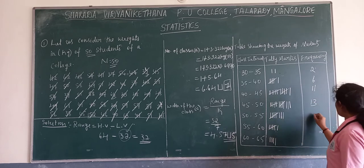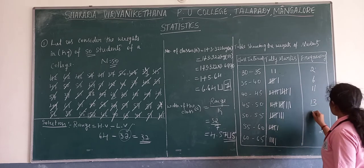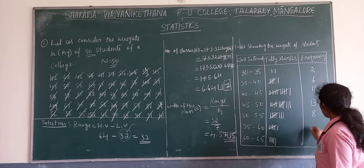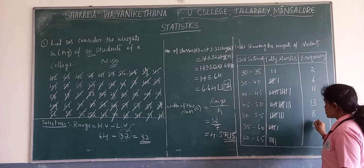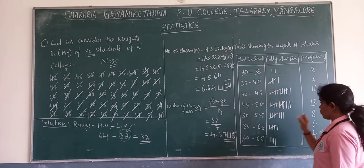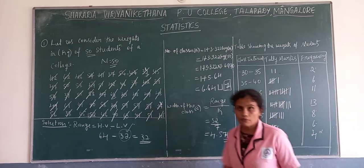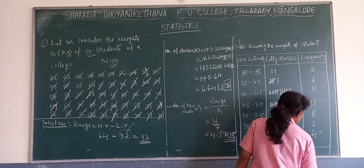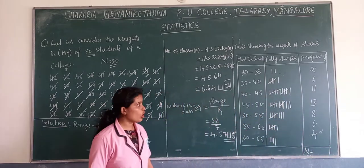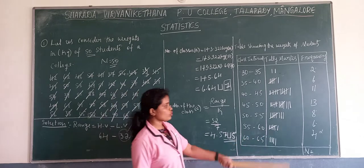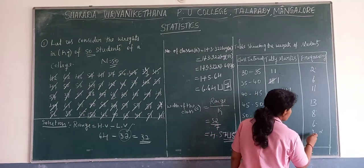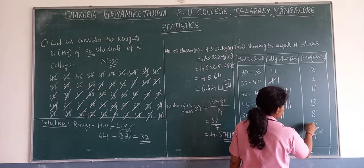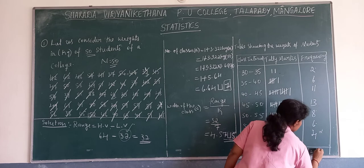And here 5: 6, 7, 8. And here 5 and 1 is 6. And here it is 4. Now you have to count — when you total it, you should get all together. When you total it, you need to get there 50. When you total it, you get there 50.